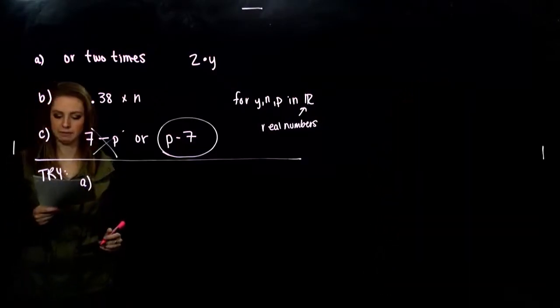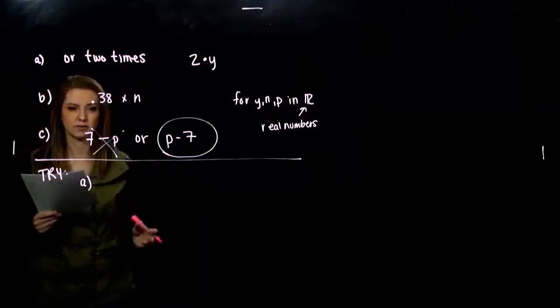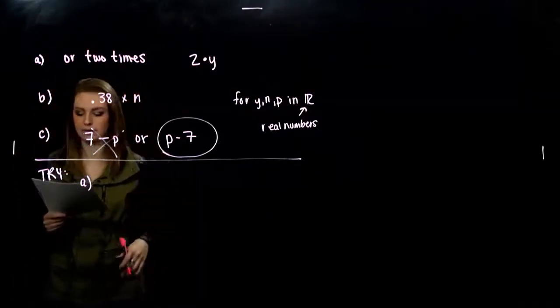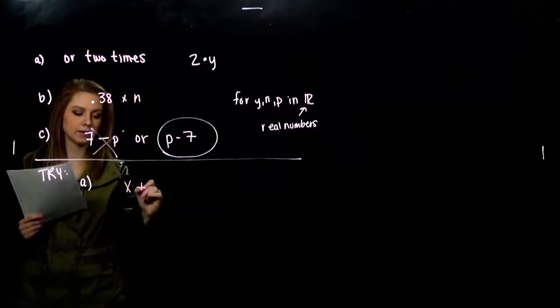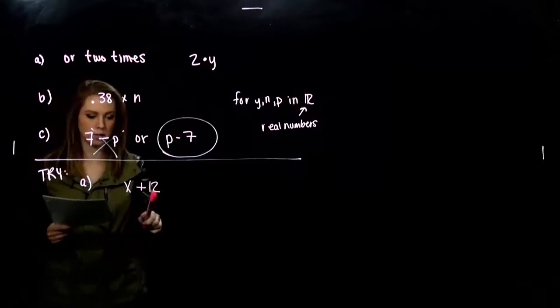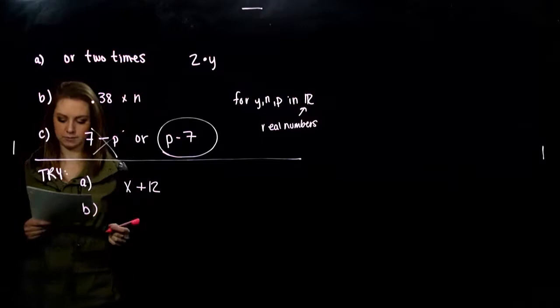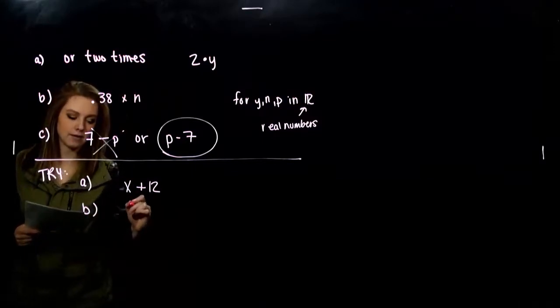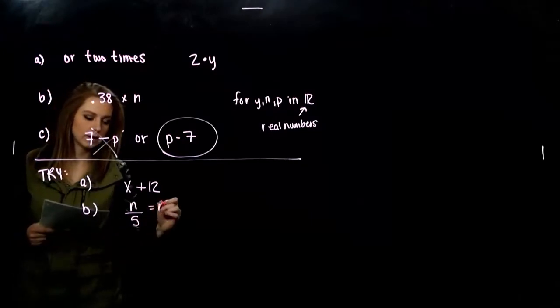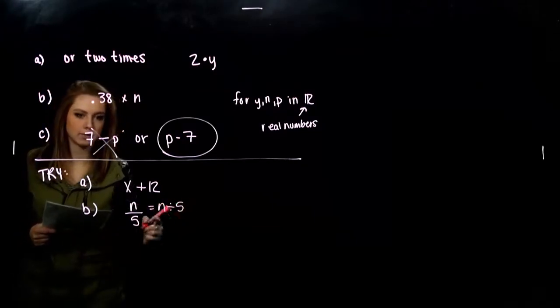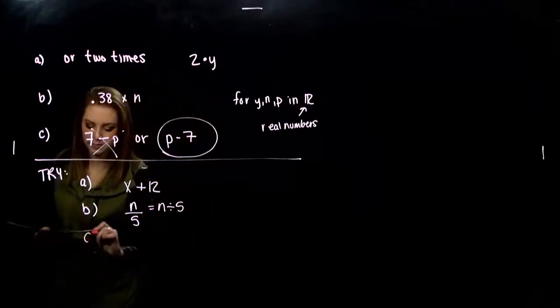So A, what did you have? 12 more than a number. Any variable will work. So if you don't have the same one that I do, that's fine. So I have some number and I'm adding 12 more to it. I have 12 more than some number. Okay? For some x. A number divided by 5. So n divided by 5. Or you could say n divided by 5 with that notation. Those are equivalent.